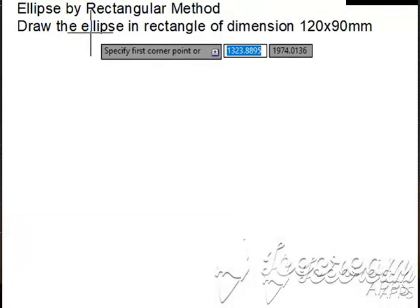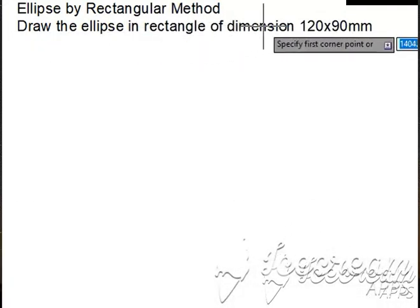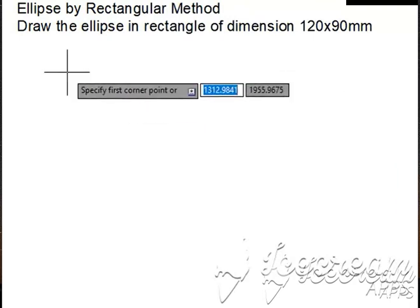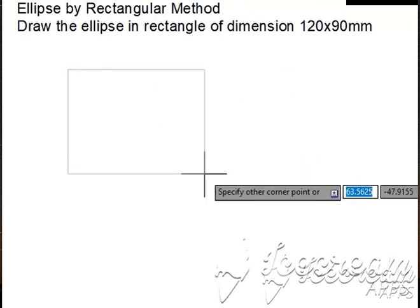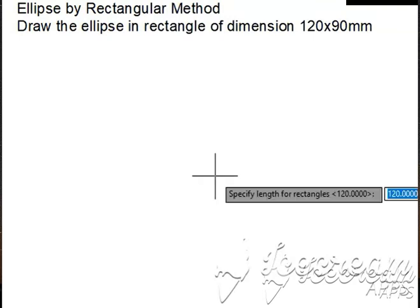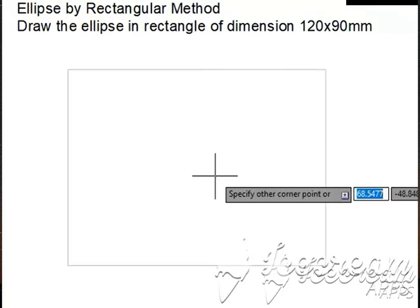First topic: Ellipse by Rectangular Method. Draw the ellipse in rectangle of dimension 120 by 90. First draw the rectangle of dimension 120 by 90 mm.